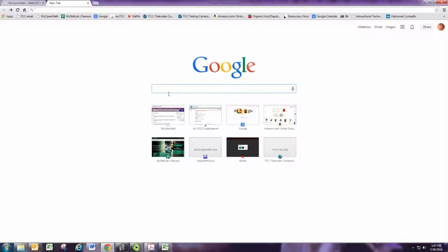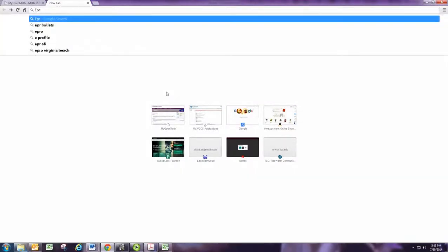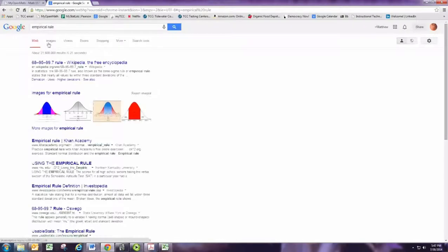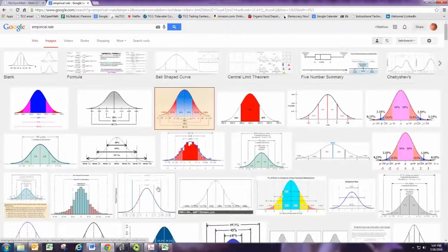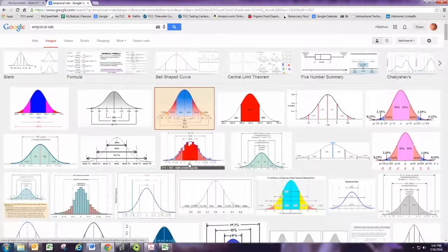I like to go ahead and find an existing empirical rule graph, and you can just do a simple online search for empirical rule, and then do an image search, and you'll find lots of nice ones.